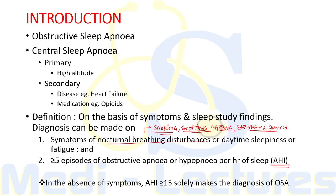For the diagnosis of OSA, there should be symptoms of nocturnal breathing disturbances, daytime sleepiness, or fatigue despite sufficient opportunity to sleep and unexplained by other medical problems, along with more than or equal to five episodes of obstructive apnea or hypopnea per hour of sleep — the apnea-hypopnea index. In the absence of symptoms, if AHI is more than or equal to 15, it can solely make the diagnosis of obstructive sleep apnea.